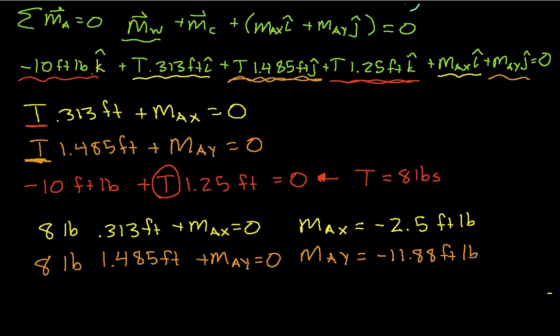So basically what we have at this point already, by just looking at moments, is we know the tension on our cable, which is 8 pounds. We also know that the couples that are applied by the hinge are given. The x component of that couple is minus 2.5 foot-pounds, and the y component is minus 11.88 foot-pounds. There's no z component because the hinge is designed to allow the door to rotate about the z-axis.